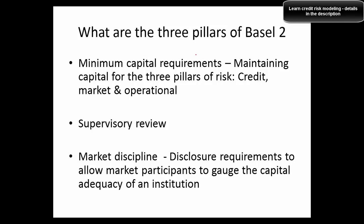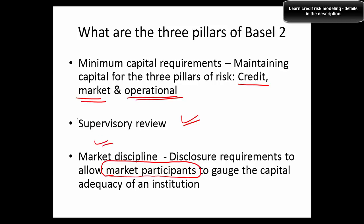What are the three pillars of Basel 2? The first is minimum capital requirements, where banks must maintain capital for the three risk types: credit risk, market risk, and operational risk. The second is supervisory review. The third is market discipline, where banks must disclose information to allow market participants — such as investors — to judge the capital adequacy of an institution.